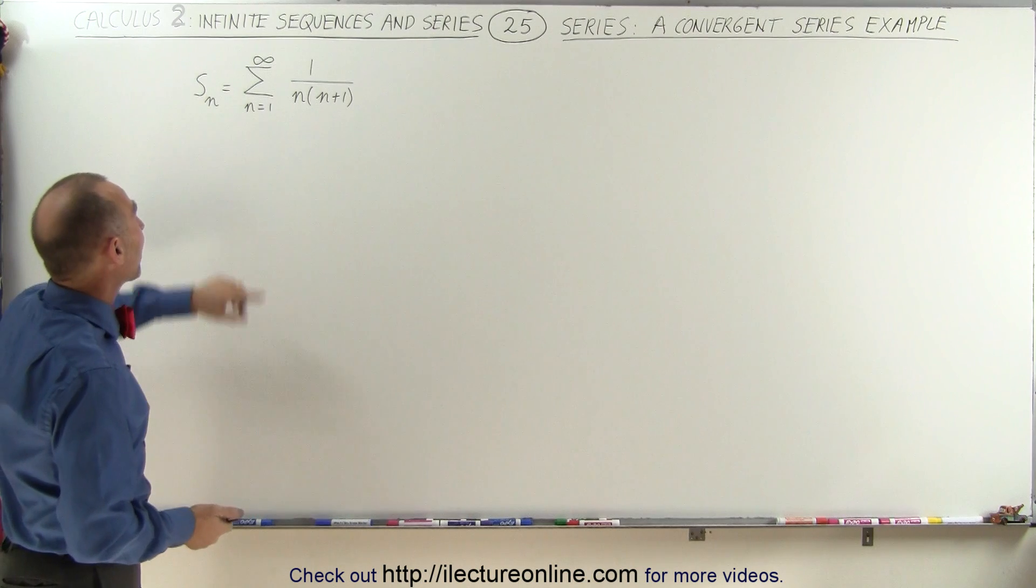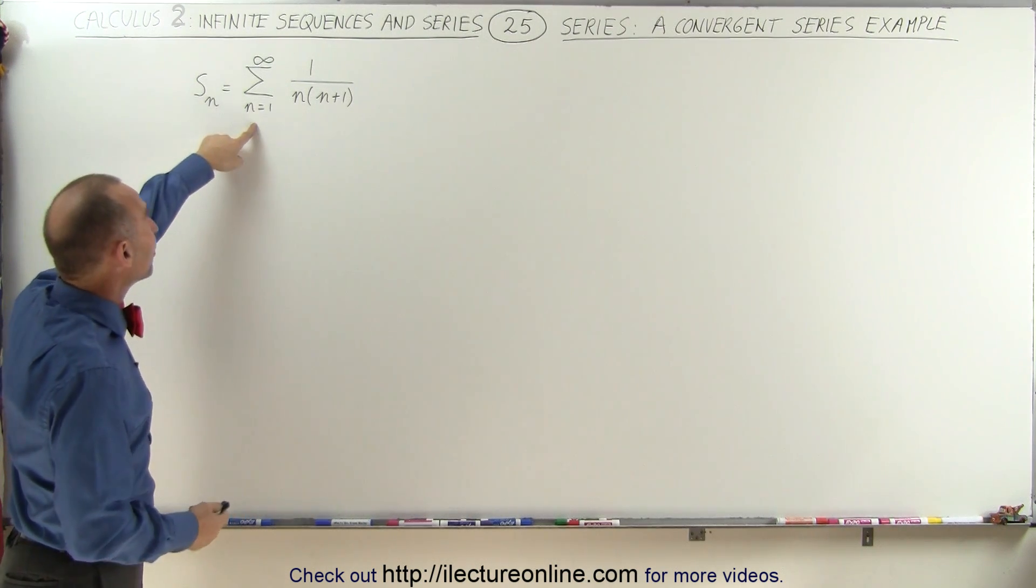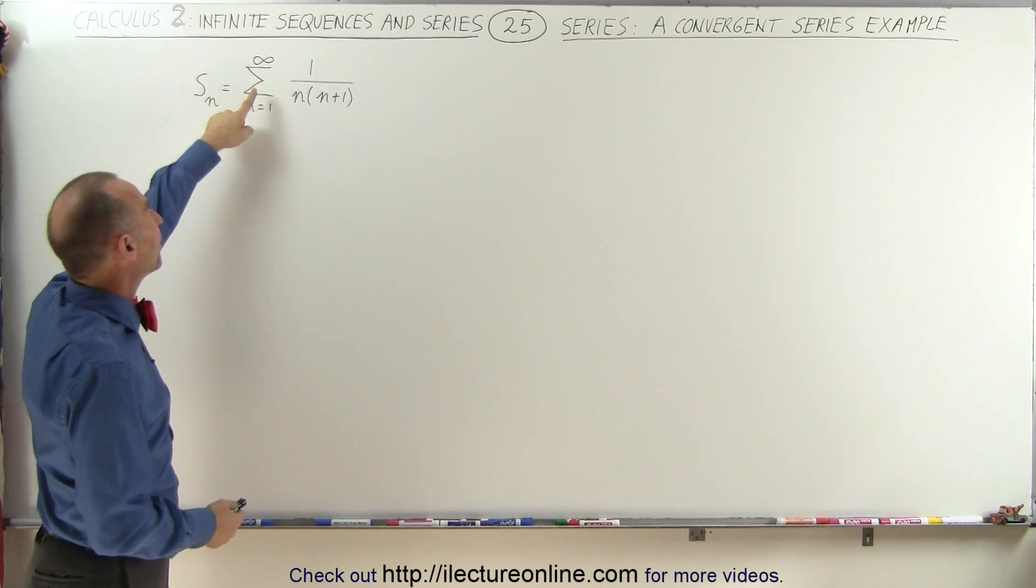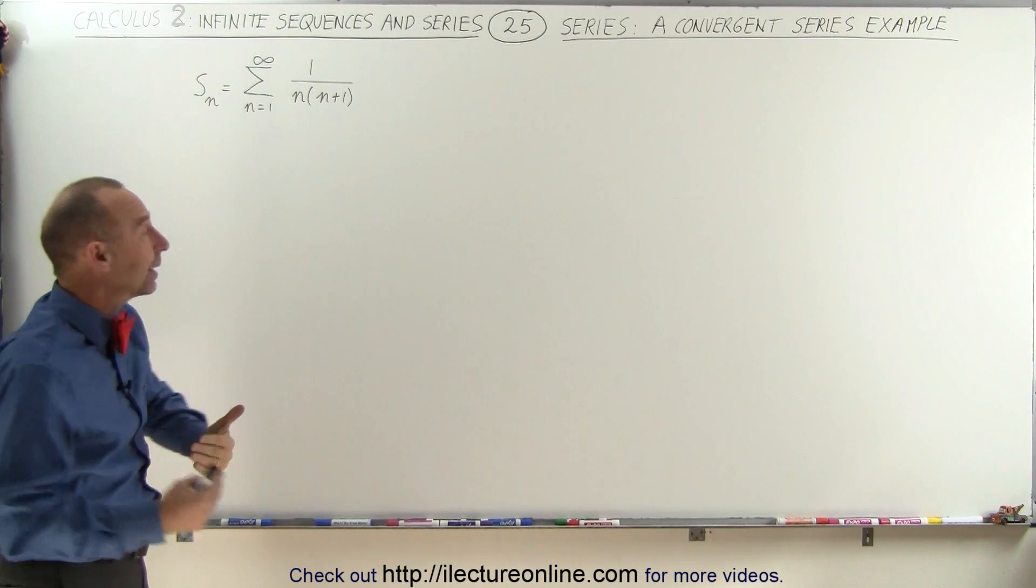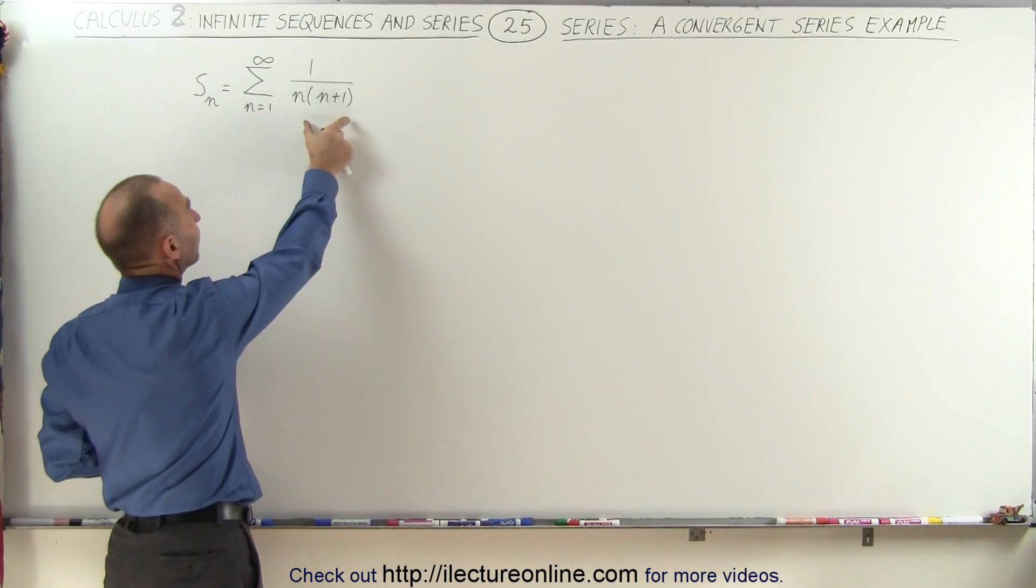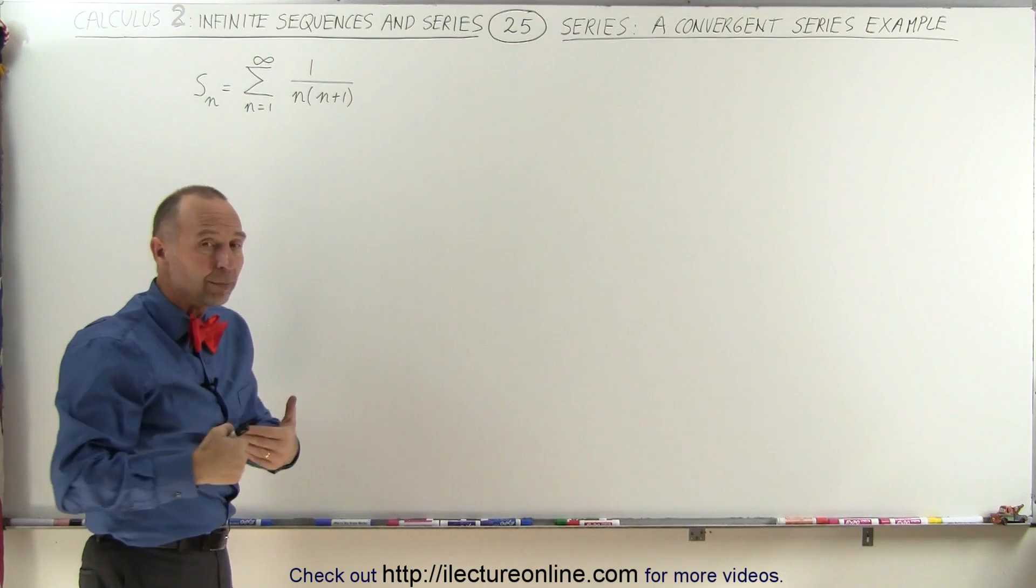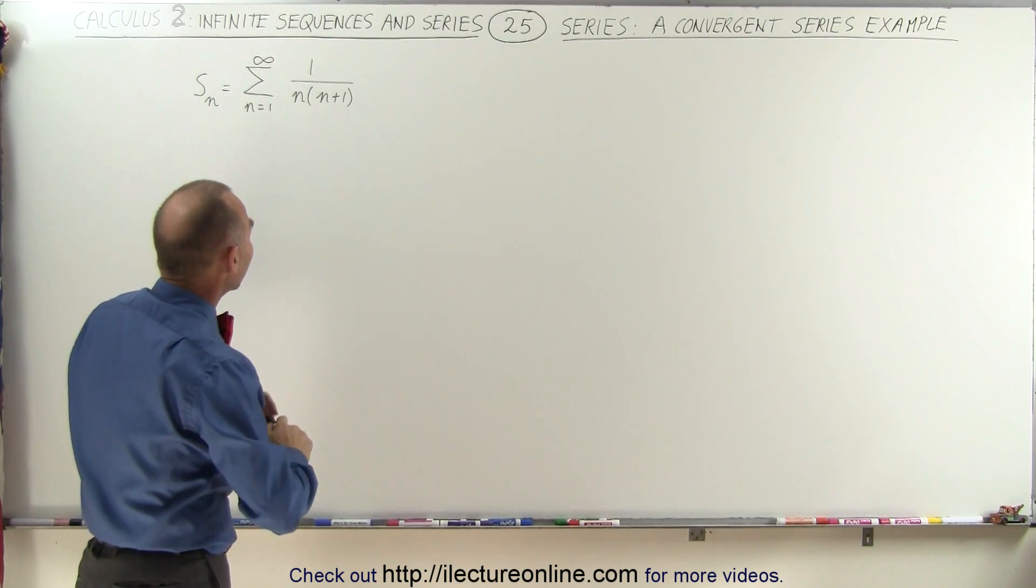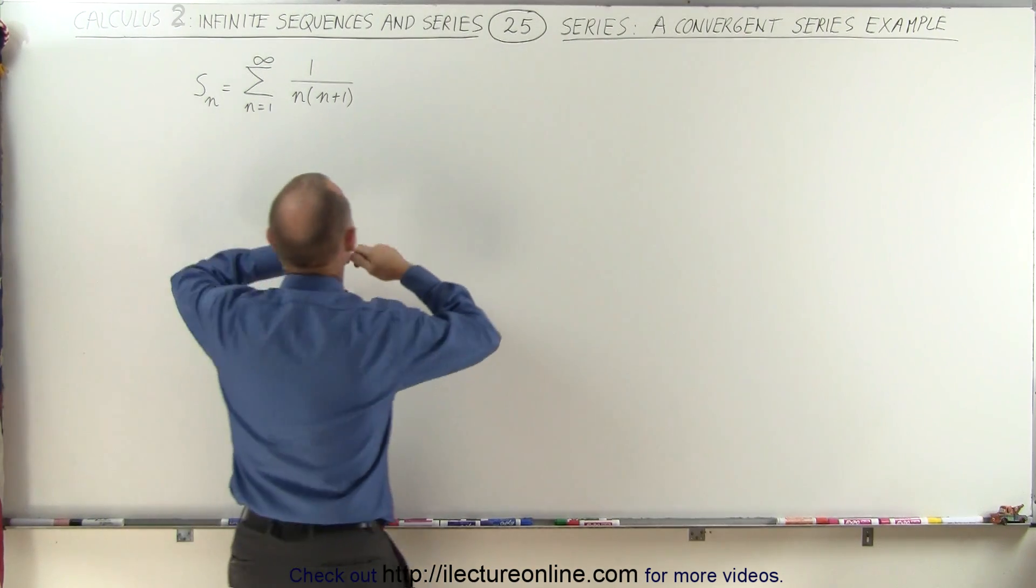Here's an example. We have a series which is defined as an infinite sum from n equals 1 to infinity of 1 divided by the product of n times n plus 1. So if we're going to plug in some numbers to see what this looks like, this series will look as follows.